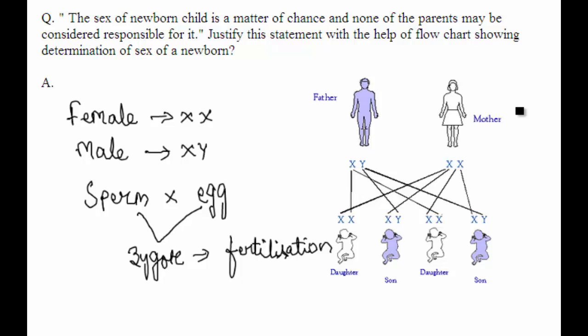So basically in human beings the females will have two X chromosomes and male will have one X and one Y chromosome. Therefore female pattern is XX and male pattern is XY.